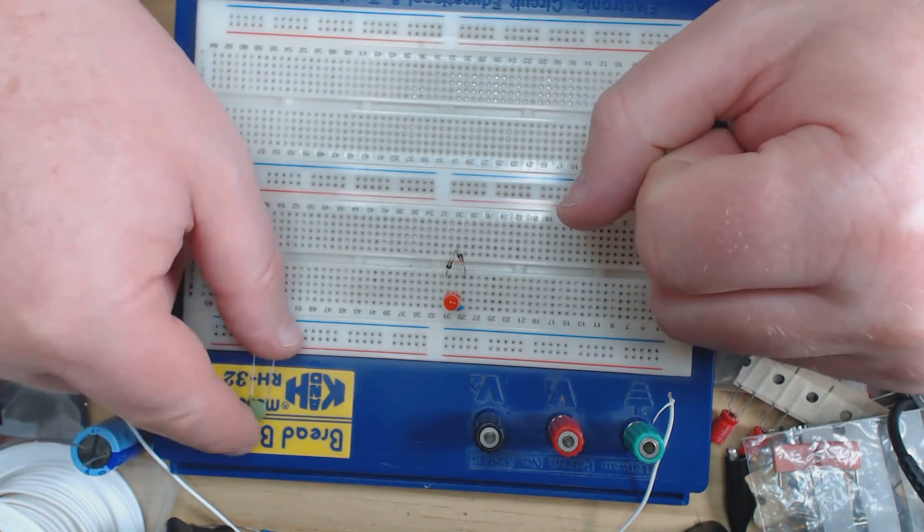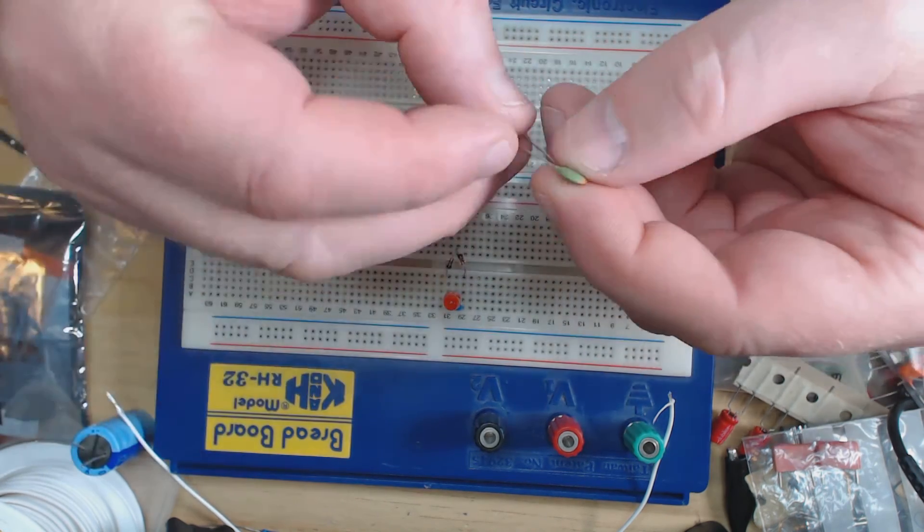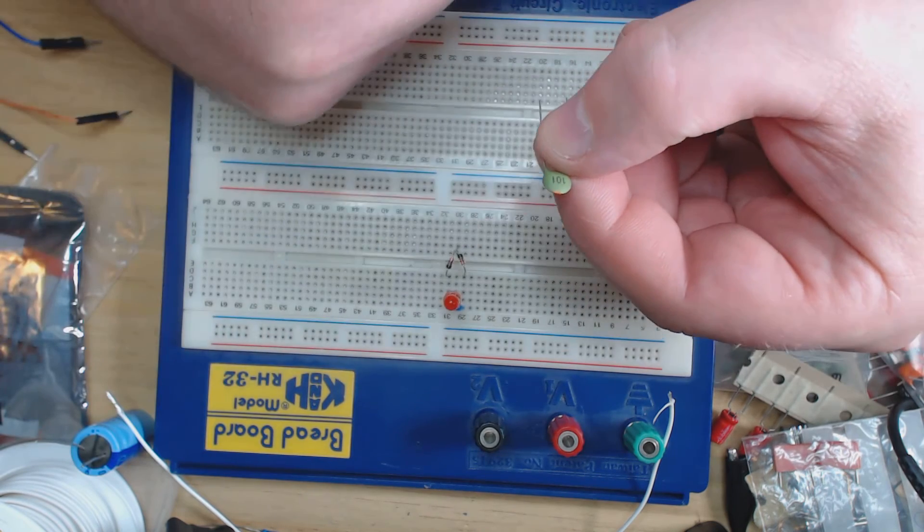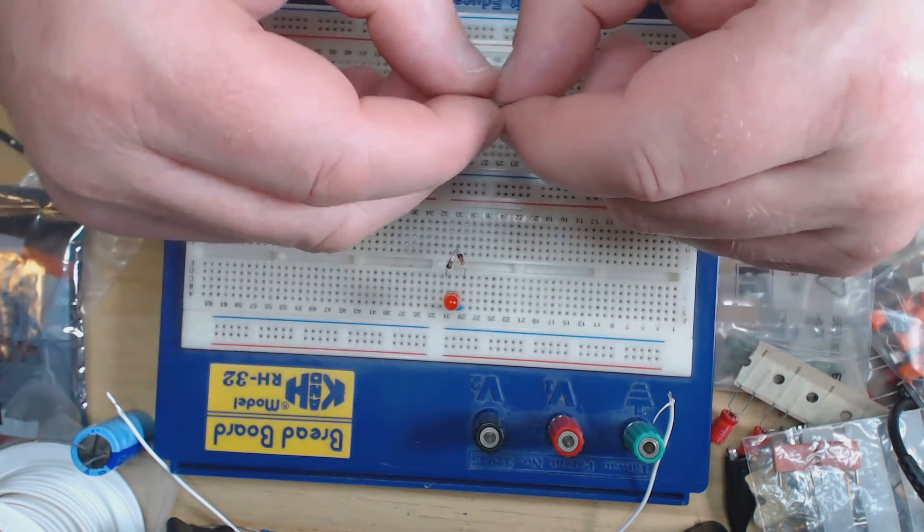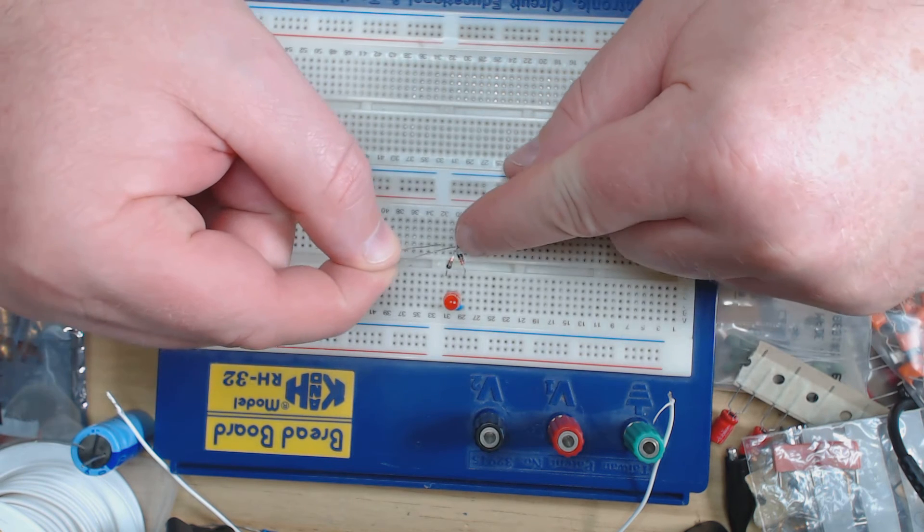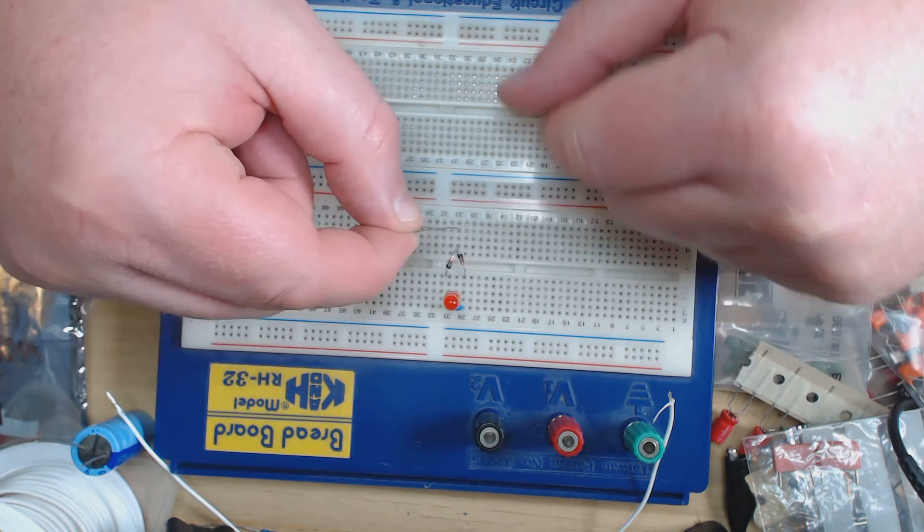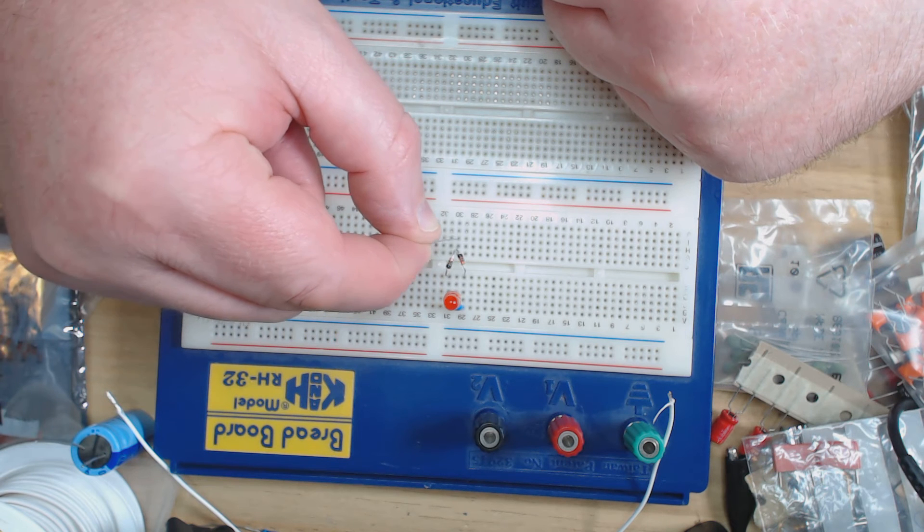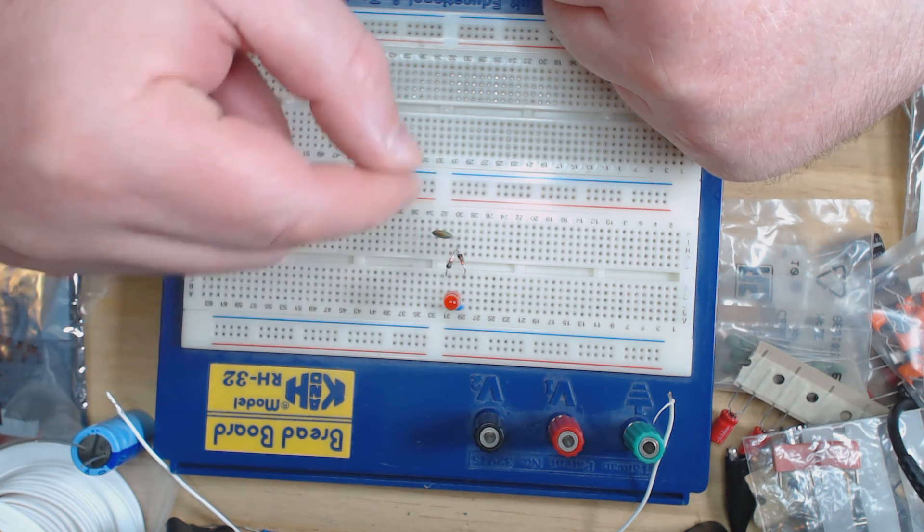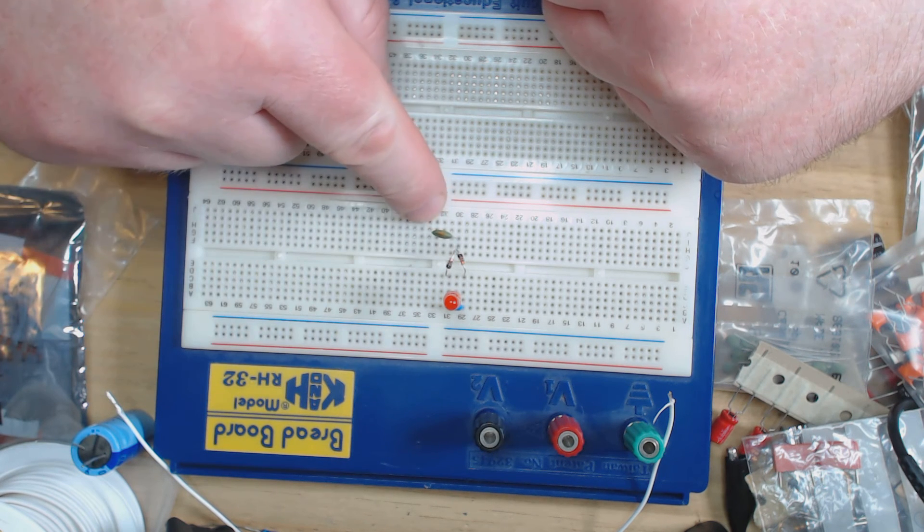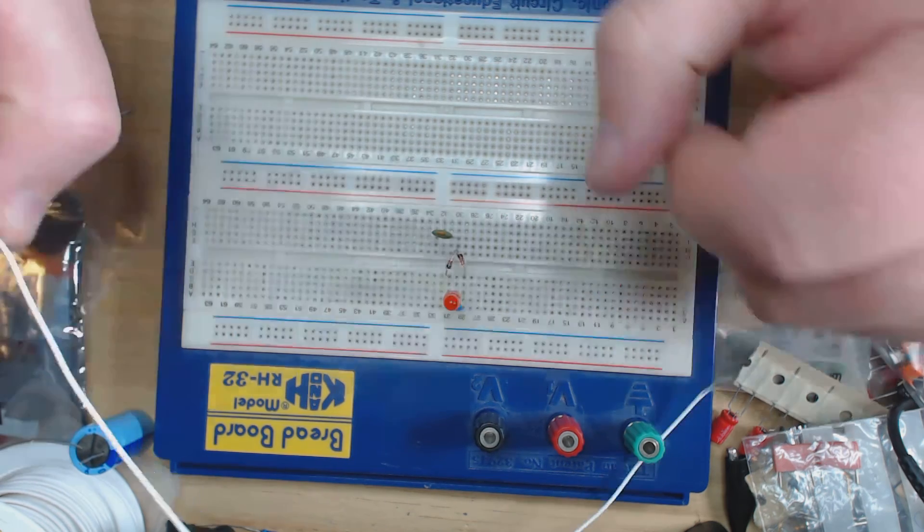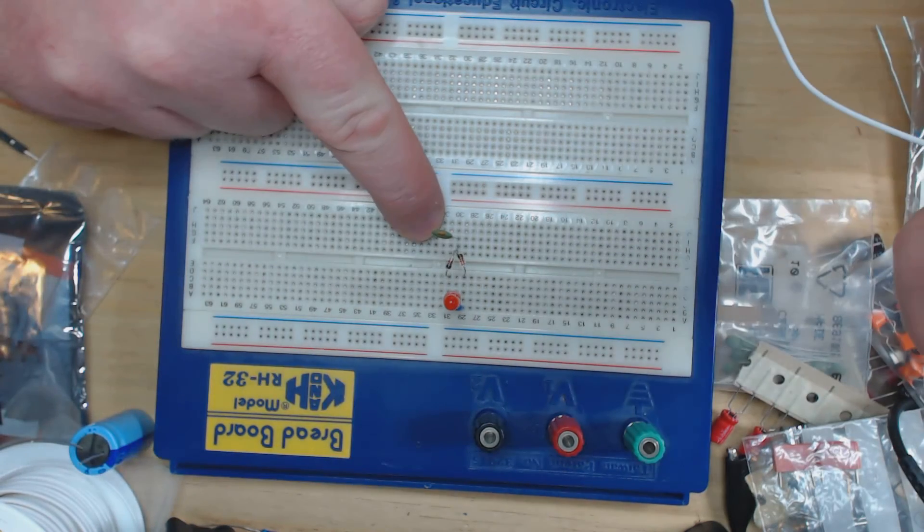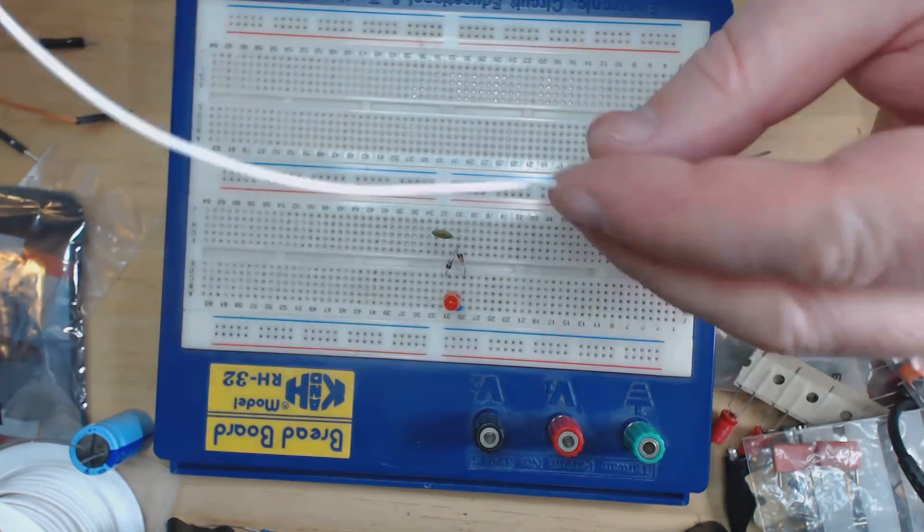Now we're going to take a hundred picofarad ceramic capacitor and where the two diodes join we're actually going to put one leg of the capacitor to that connection. Then we're going to leave one leg in free space for the moment. That's your RF pickup.